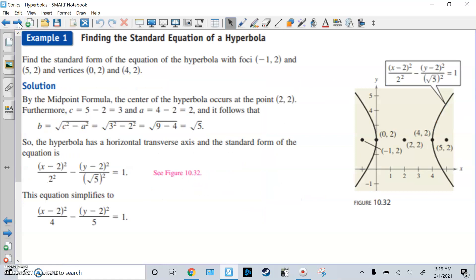Find the center form of the equation of the hyperbola with foci at (-1,2) and (5,2), and vertices (0,2) and (4,2). So the midpoint of either the foci or the vertices will get you to the center of the hyperbola. So we get (2,2) after doing that.